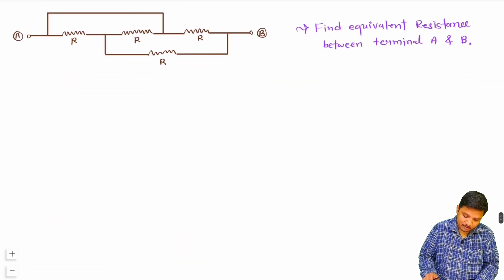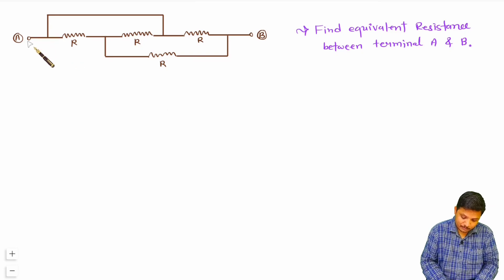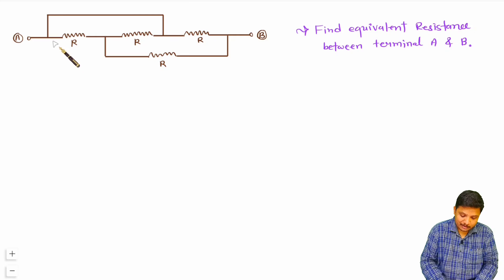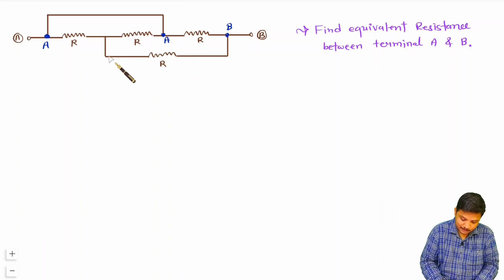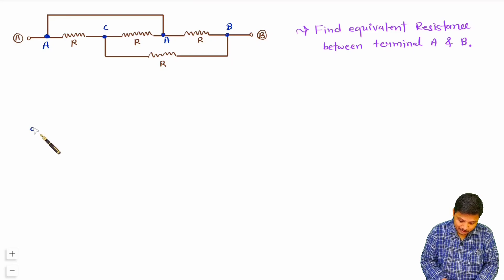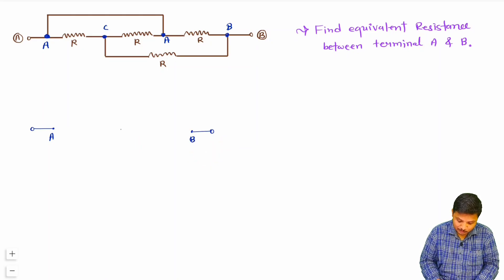In this second question we are required to find equivalent resistance between A and B. Compared to the previous circuit, the difference is that one additional resistance is connected. We do not see anything in series or parallel, so we will redraw the circuit. Here terminal A is identified along with its shorted point, and terminal B is identified. Since there is a resistance in between, we introduce another terminal — let us call it terminal C.